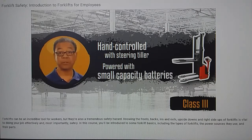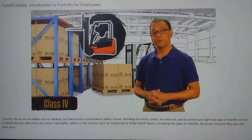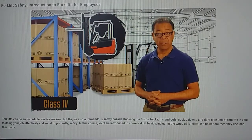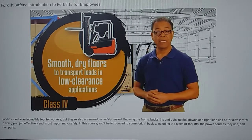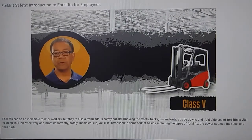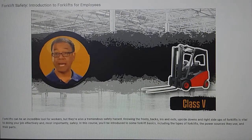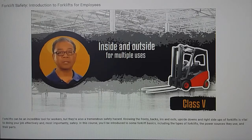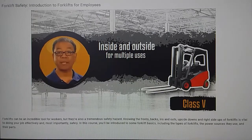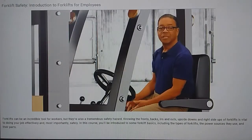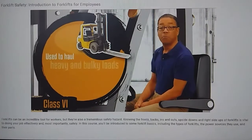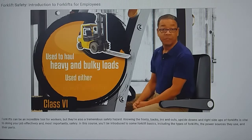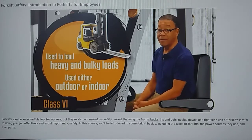They're powered by smaller capacity industrial batteries. Class 4 internal combustion engine trucks with cushioned tires are used inside on smooth, dry floors to transport pallet loads in low-clearance applications. Class 5 internal combustion engine trucks with pneumatic tires can be used both inside and outside for just about anything. This series has a large range of capacities, and they're powered by internal combustion engines. Class 6 electric and internal combustion engine tractors are used for hauling heavy or bulky loads, and can be used outdoors if they have internal combustion engines, or indoors if they are battery powered.